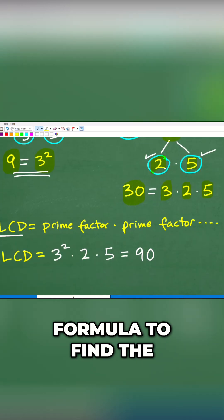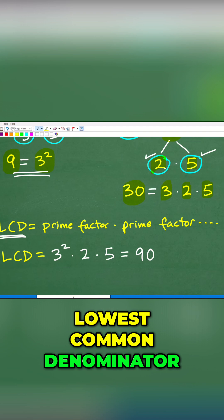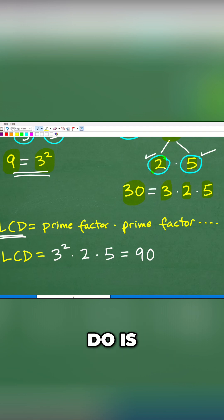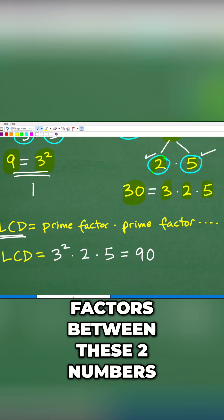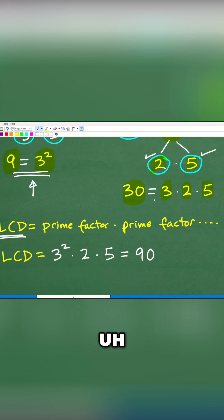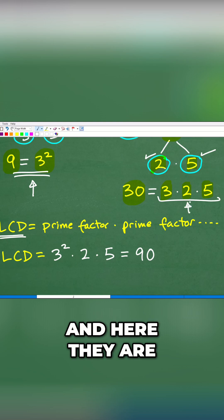So here is the formula to find the lowest common denominator. What we need to do is represent all the prime factors between these two numbers. So we're looking at 9's prime factor, which is of course 3 squared, and 30's prime factors. And here they are right there.